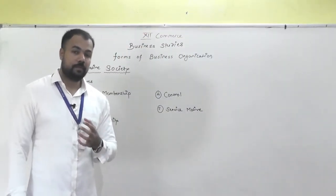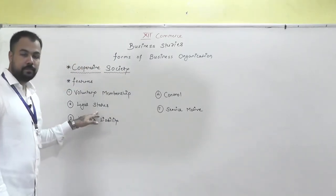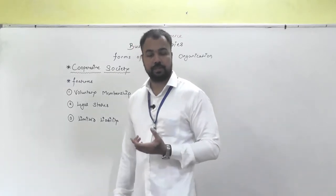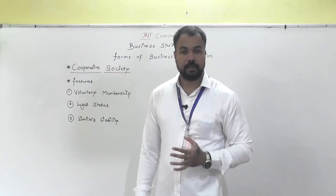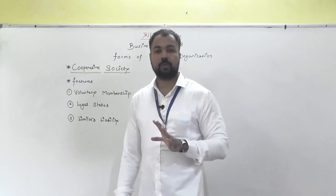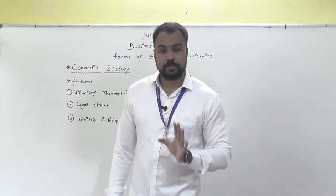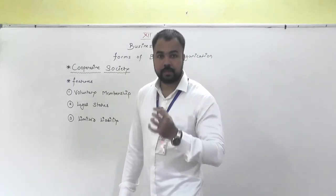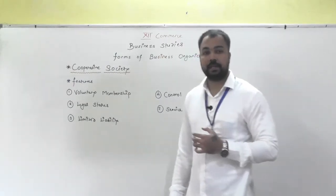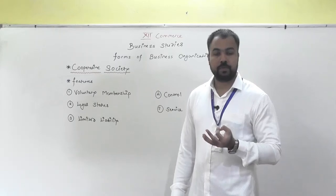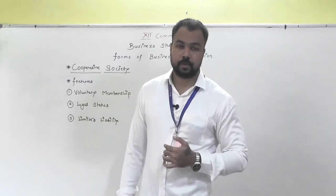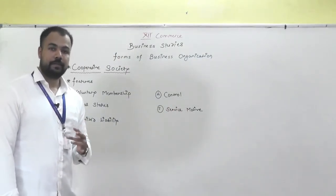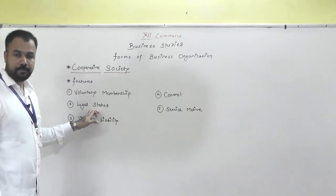Because of legal status, if a member has a problem with the society or with another member, they can file a suit against the society or against that particular member. Similarly, if your society has a problem with a member, the society can file a suit against that particular member. If a third party outside has a problem with your society, they can file a suit against your society, and you can also file a suit against that third party.